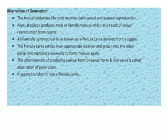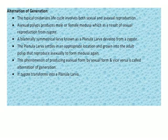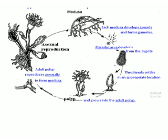Alternation of generation: the typical cnidarian life cycle involves both sexual and asexual reproduction. Asexual polyps produce male or female medusa through sexual reproduction. From the zygote, a bilaterally symmetrical larva known as a planula larva develops — the name of cnidarian larva is planula larva, which is a very important MCQ. The planula larva settles in a location and grows into adult polyps, which then reproduce asexually to form medusa again. This process — reproducing asexually from a sexual form and vice versa — is known as alternation of generation.